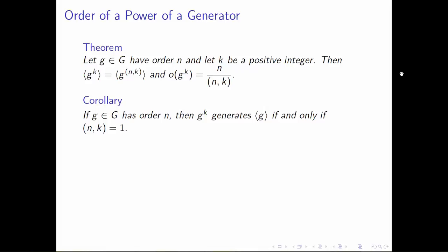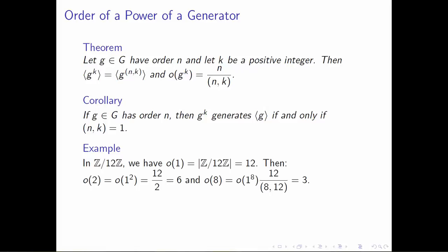This is something very useful. It tells us very quickly how to determine the number of generators of a cyclic group. Going back to the previous example, let's look at Z mod 12Z. The first thing we need to do is identify a generator. In Z mod 12Z, we pick 1 as our generator, and the order of 1 is 12, the size of the group.